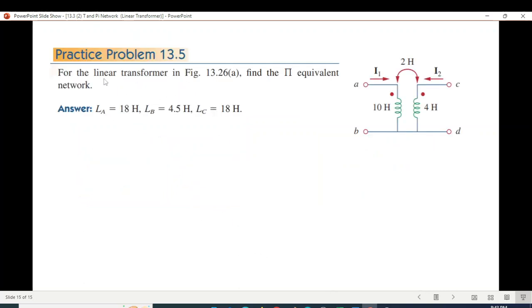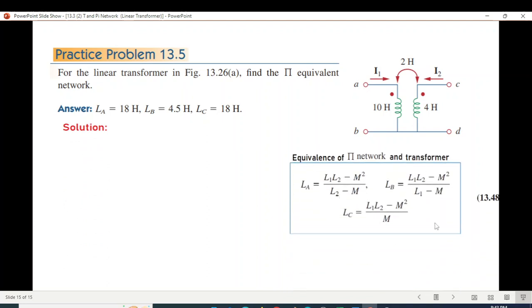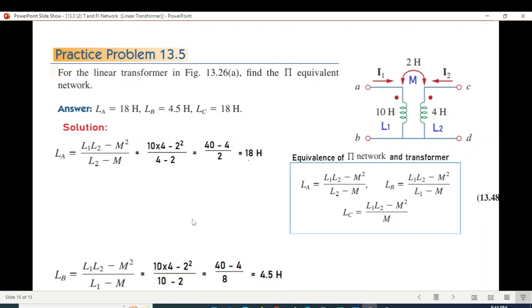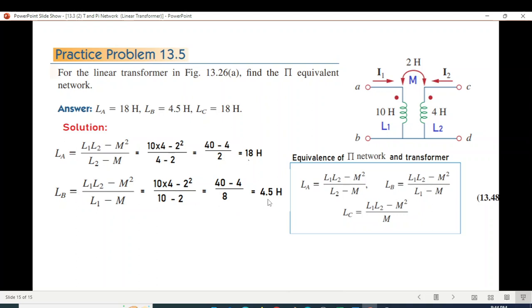So let's solve an example now: practice problem 13.5. You have to find the Pi equivalent. This is the answer given, so we try to get this answer. Formula: this is the formula. All we need to do is know what is L1, what is L2, and what is M, and plug in the values. So La, plugging in the values, will be 18 Henry. Lb, again plugging in the value, will be 4.5 Henry. And Lc will be 18 Henry. So we got the same answer that the book has given. I hope you have been able to follow this. Please let me know through your comments. Thank you.